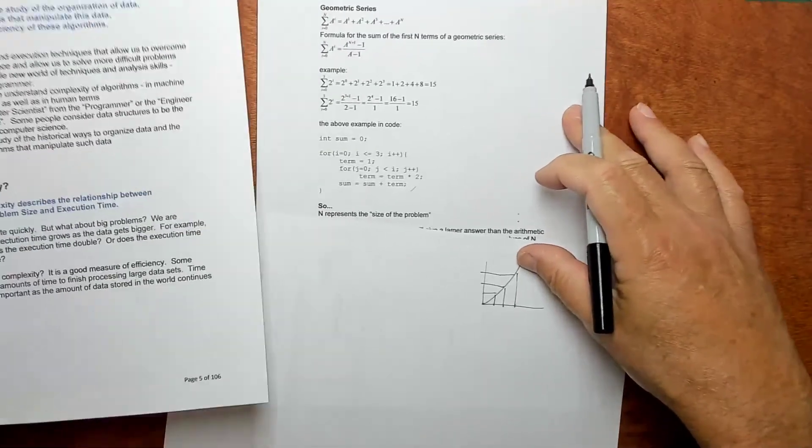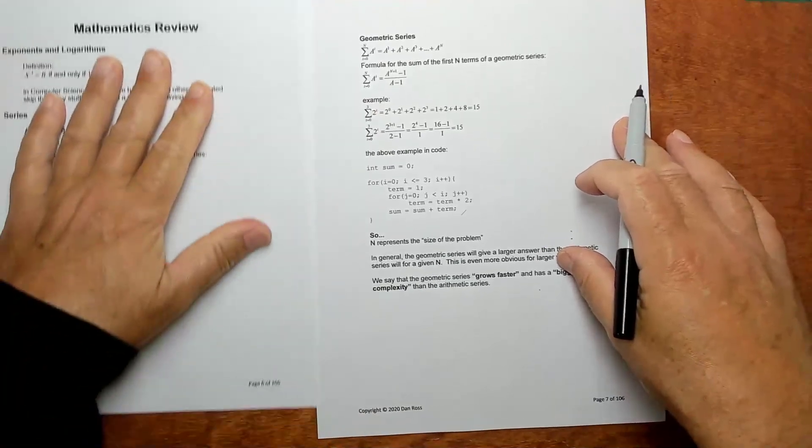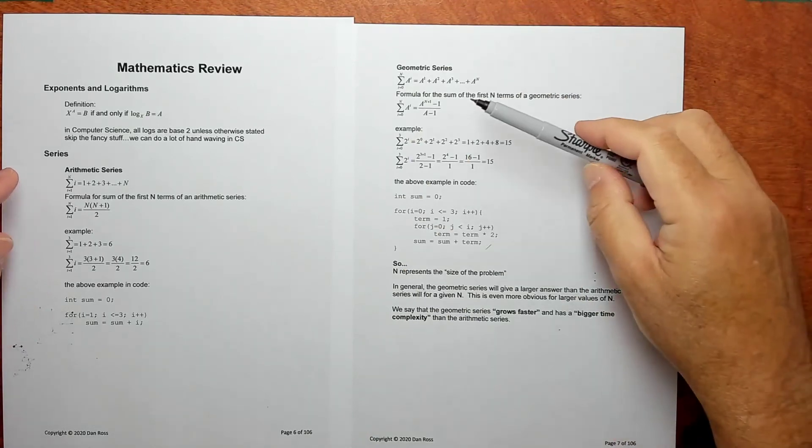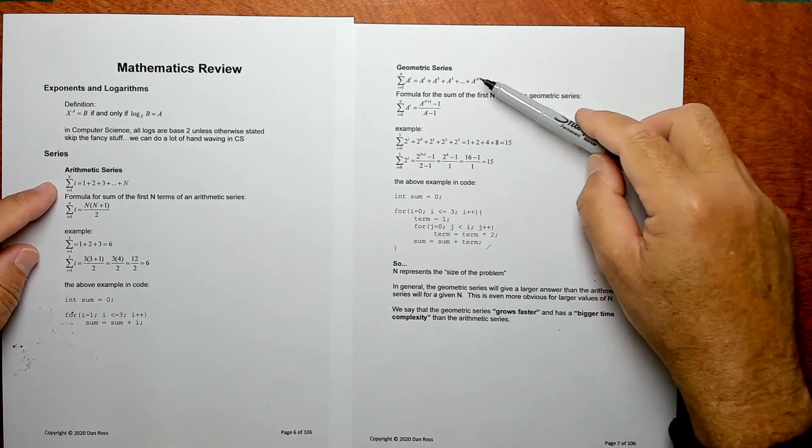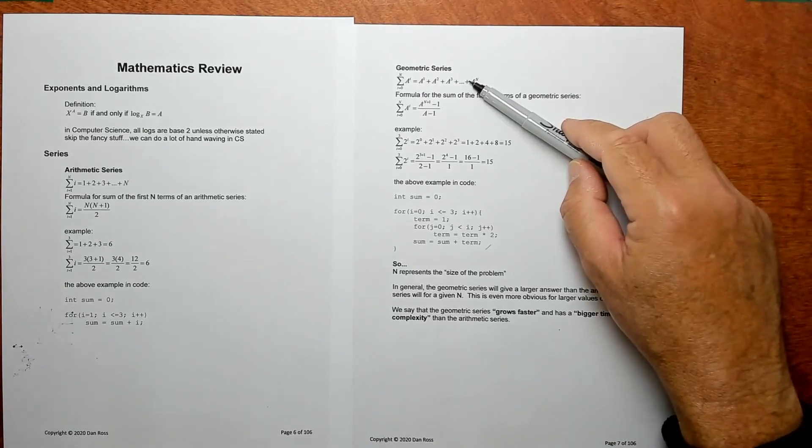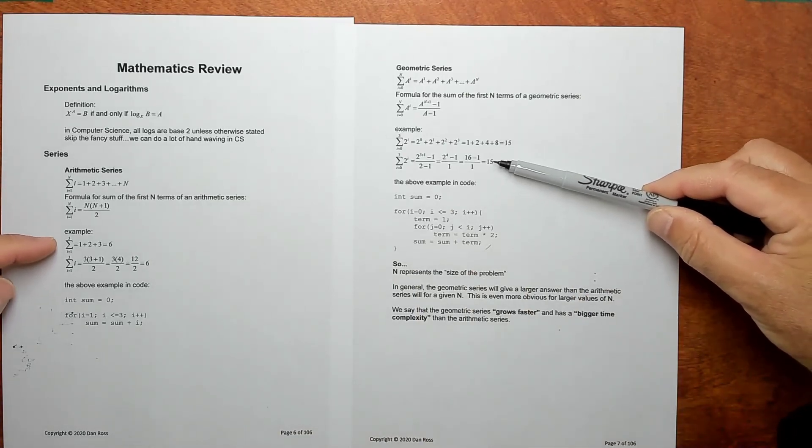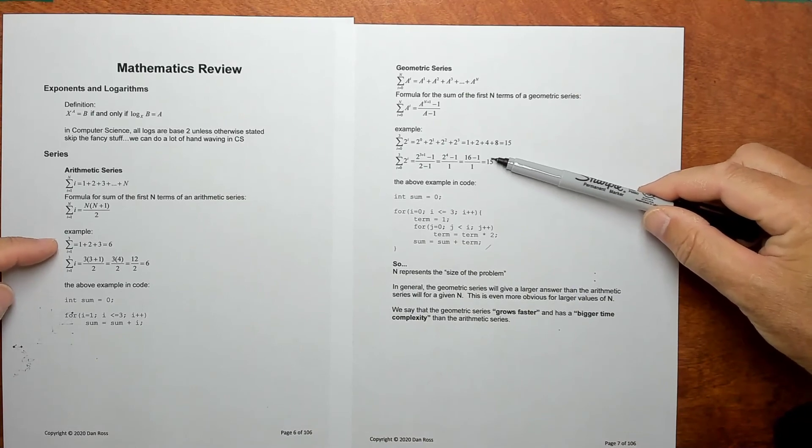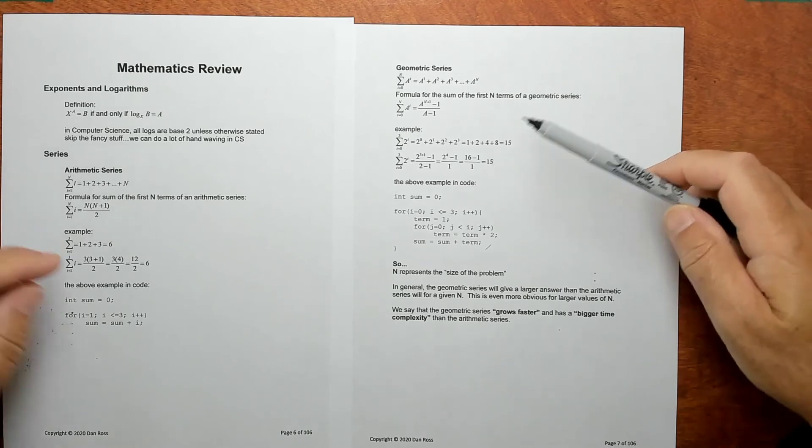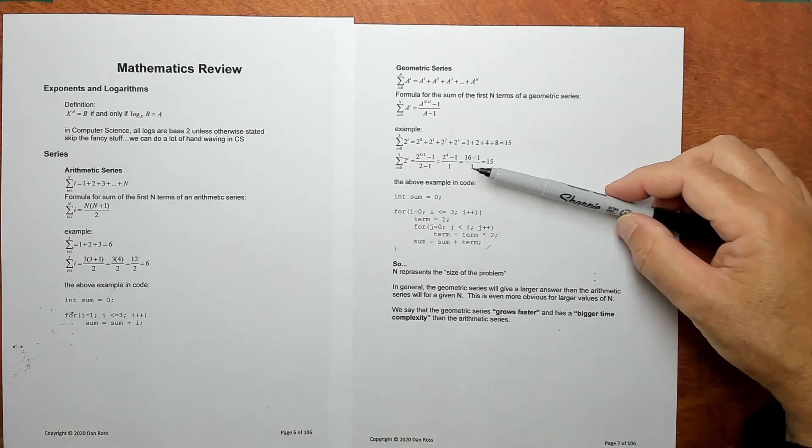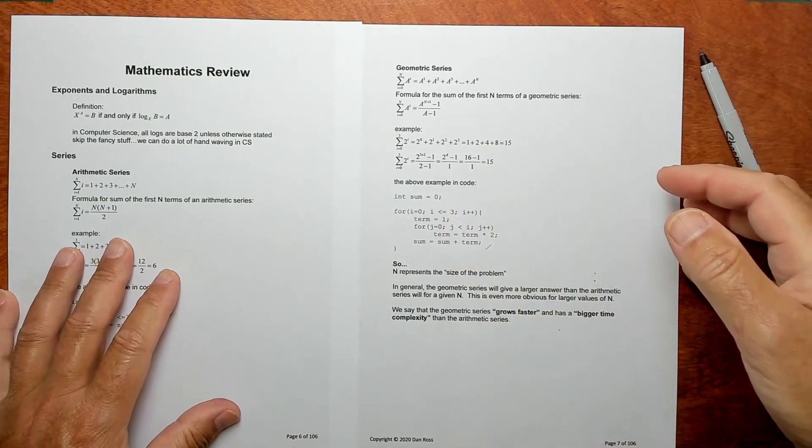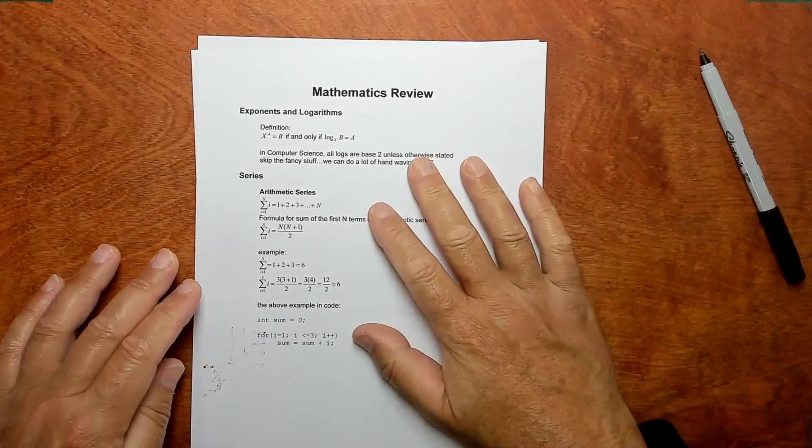So I've just presented two series here. An arithmetic series and a geometric series, and the geometric series has a worse time complexity. That is, as the size of the problem gets bigger, the time to execute that problem grows much faster for the geometric series than it does for the arithmetic series. And the other concept is that sometimes there's formulas for series that execute in much fewer operations. So that's most of the introductory concepts for this course and the very basic math that we're going to see. Thanks.